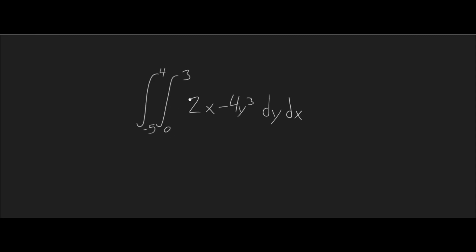So, here we have the surface, 2x minus 4y cubed. And our bounds for the surface, our bounds for the y, are 0 to 3. And our bounds for the x, are negative 5 to 4.